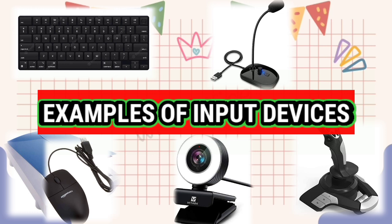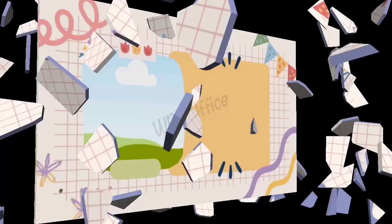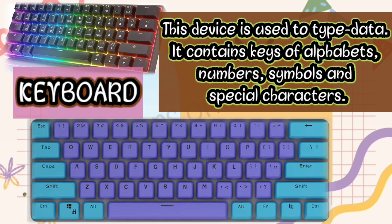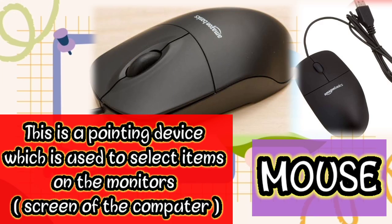Let's see the functions. First, we have the keyboard. This device is used to type data — it contains keys of alphabets, numbers, symbols, and special characters. You can see we have the alphabet, the numbers from one to nine, and special characters like plus and minus.